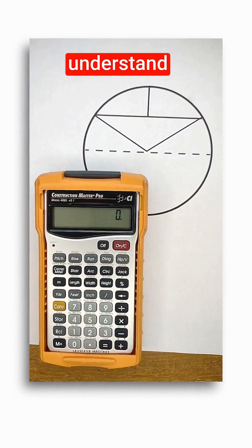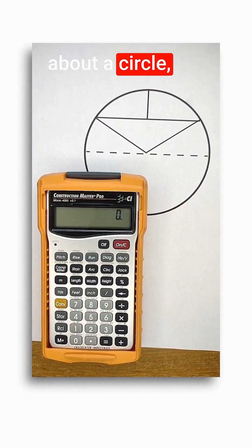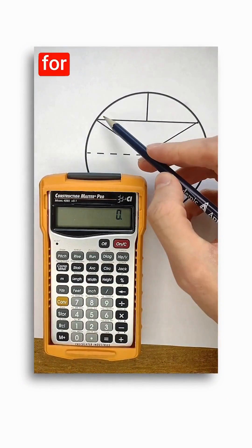The Construction Master Pro can understand four measurements about a circle, but it only needs to know two to solve for everything else.